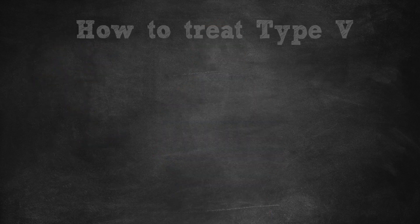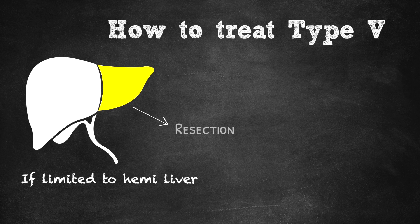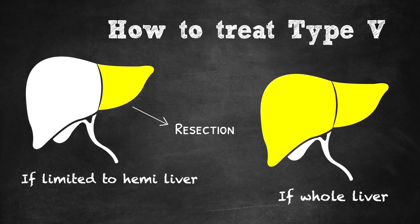Type 5 requires more workup to determine the best operation to achieve complete cystic resection, and that may even require a liver transplant. If the cystic burden is limited to one hemi liver and would allow for resection with adequate liver remnant and preserved biliary outflow, you can address it surgically with a liver resection. However, if the cystic disease is diffuse throughout the liver, you may have to consider evaluating that patient for liver transplantation.